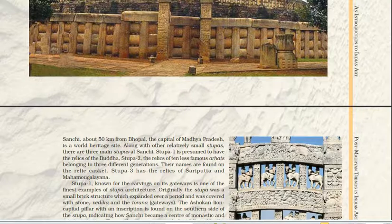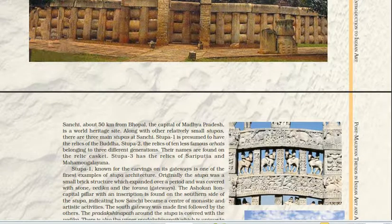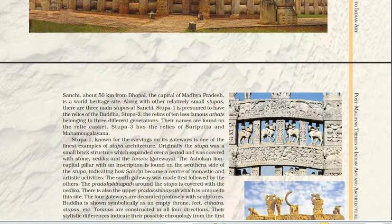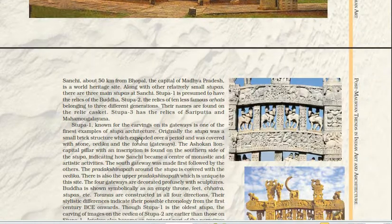Along with other relatively small stupas, there are three main stupas at Sanchi. Stupa 1 is presumed to have the relics of Buddha. The second stupa has the relics of the 10 less famous Arahats belonging to three different generations, and their names are found on the relic casket. The third stupa has the relics of Sariputta and Mahamoghalayana.